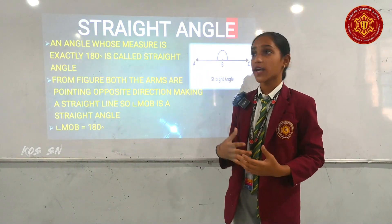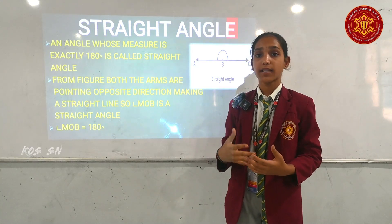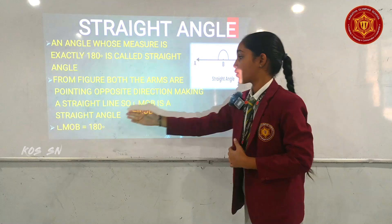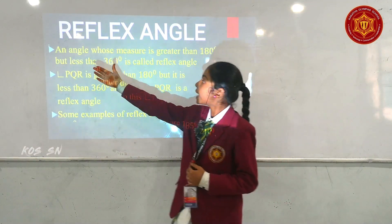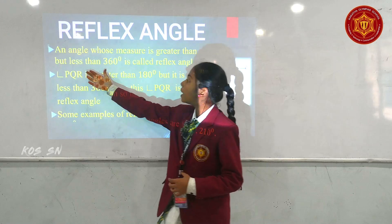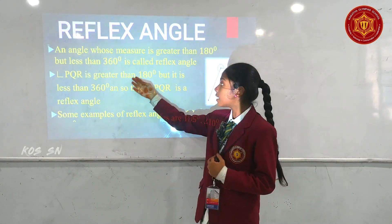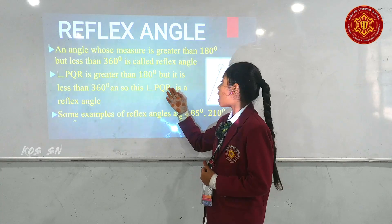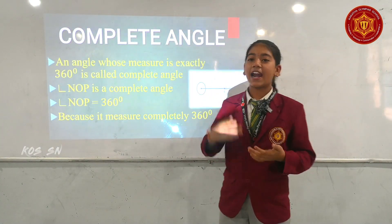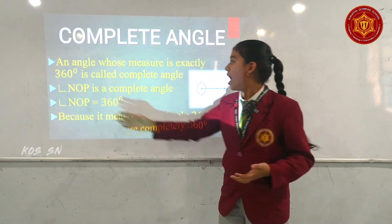Now I am going to explain about Straight Angle. An angle whose measure is actually 180 degrees is called Straight Angle. Reflex Angle: an angle whose measure is greater than 180 degrees but less than 360 degrees is called Reflex Angle. The next topic is Complete Angle: an angle whose measure is exactly 360 degrees is called Complete Angle.